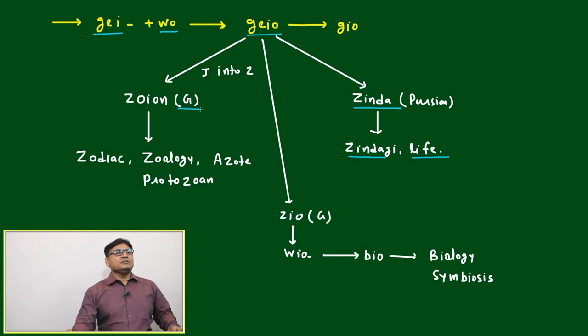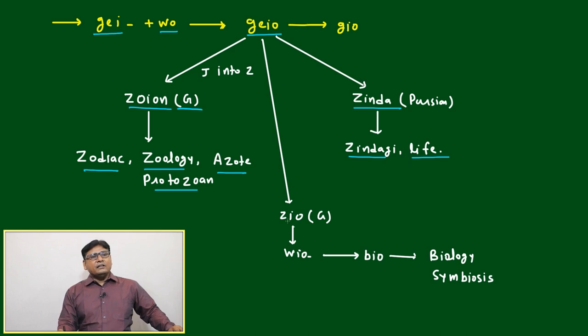Another word has come from the Greek side - that is zoonian. Zoonian means zodiac, zoology, azure, protozoon. Another route is 'zio', based on that we will put biology, symbiosis - all these words come from the root of zio.